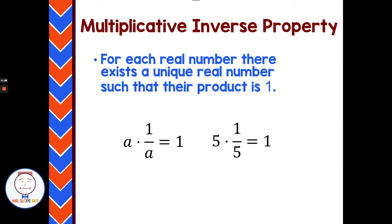Next, the multiplicative inverse. Every number has a reciprocal, or an inverse. If you multiply a number and its inverse, you get 1. For example, 5 has an inverse of 1/5 — multiply 5 and 1/5 and you get 1. Or 2 has an inverse of 1/2 — 2 times 1/2 is 1. Every number has an inverse, and when you multiply them together, their product is 1.